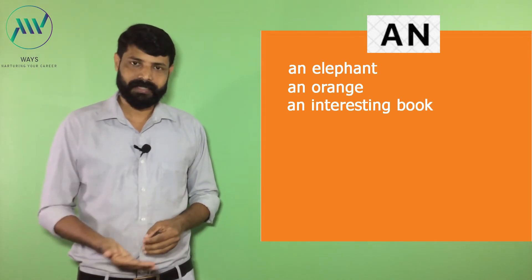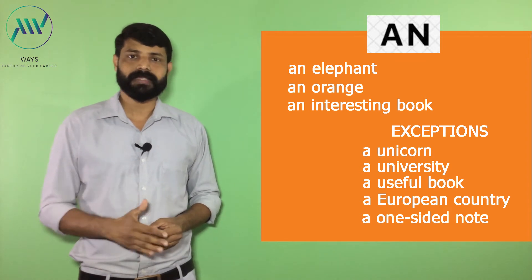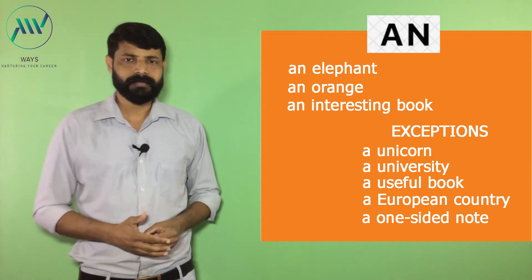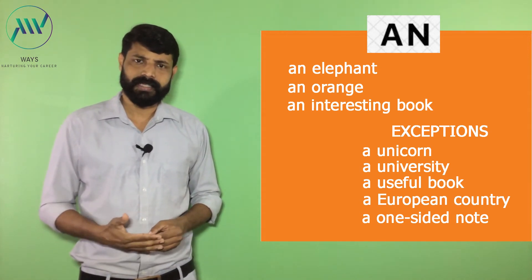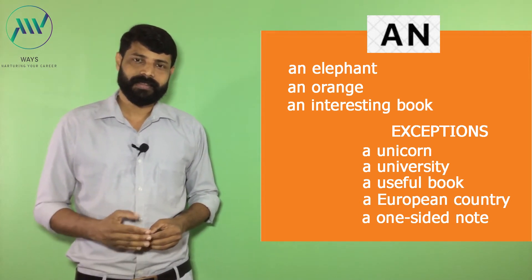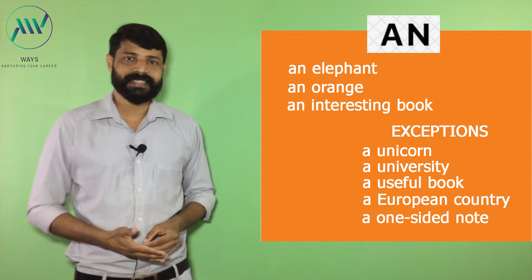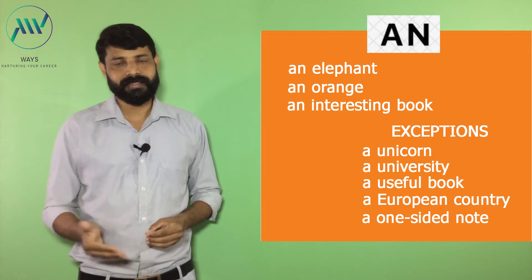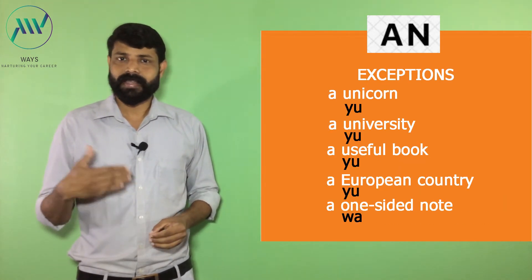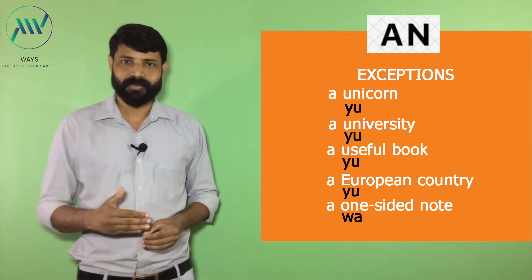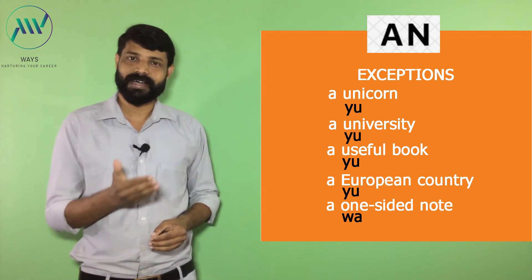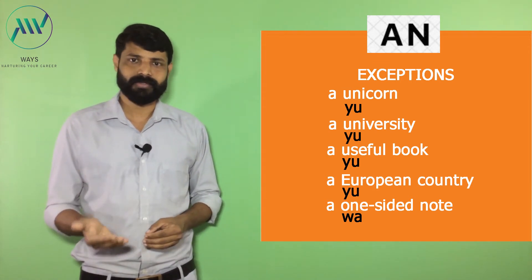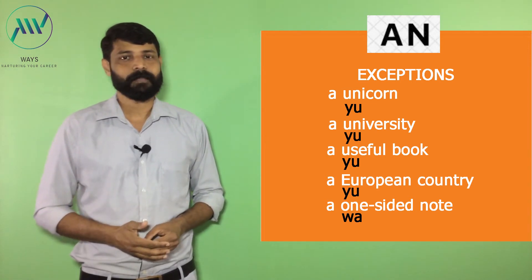These are the basic rules, but there are exceptions. Sometimes a word may start with a vowel letter but sound like a consonant. For example: a unicorn, a university, a useful book, a European country, a one-sided note. All these examples start with a vowel letter, but they don't sound like a vowel — they sound like a consonant. For instance, 'unicorn' starts with the sound 'yu,' which is a consonant sound, so we use article A. 'University' also starts like 'yu,' so we use article A.